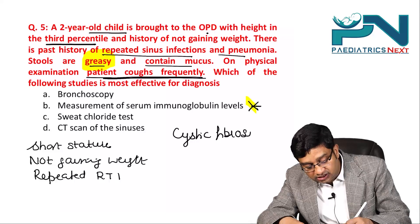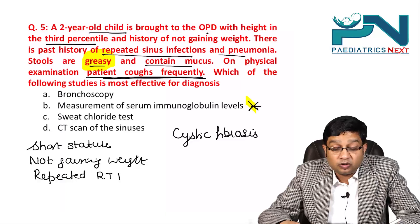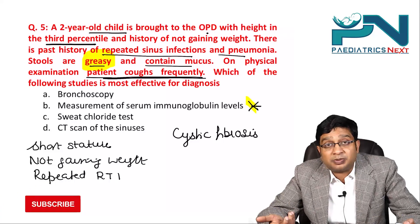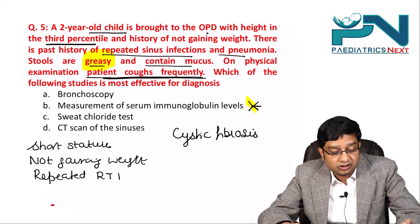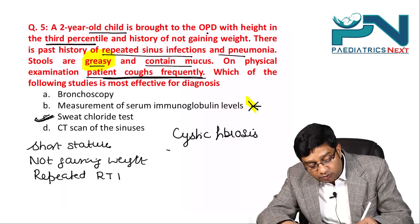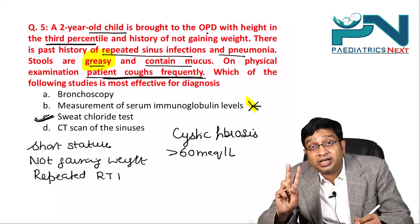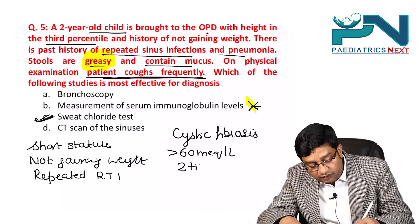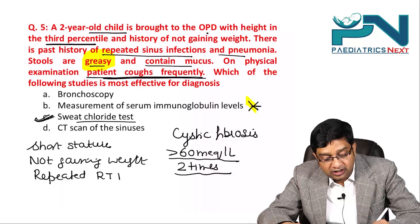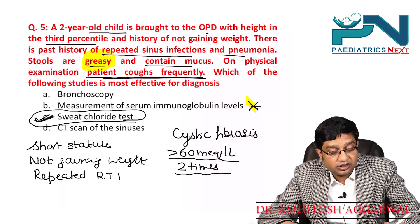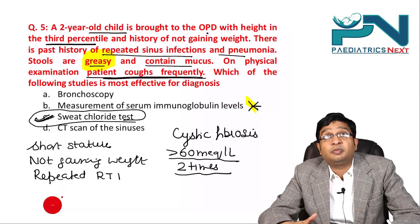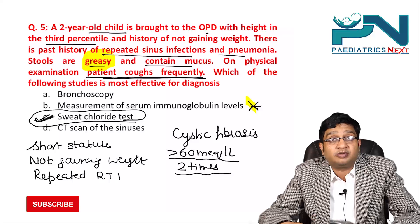For diagnosing cystic fibrosis, bronchoscopy and CT scan of the sinuses are not helpful. The most effective diagnostic test is the sweat chloride test, with a positive result being more than 60 milliequivalents per liter. This confirms cystic fibrosis. That concludes the MCQs on the respiratory system; the next video will cover MCQs on the cardiovascular system.